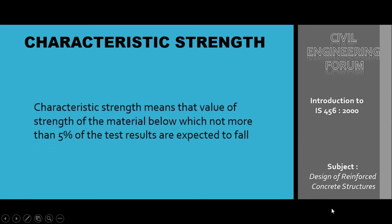The definition states that characteristic strength means that value of the strength of the material below which not more than five percent of the test results are expected to fall. Below this particular value, not more than five percent of test results are expected to fall — meaning 95 percent of test results are above our expected value. That value is known as characteristic strength.